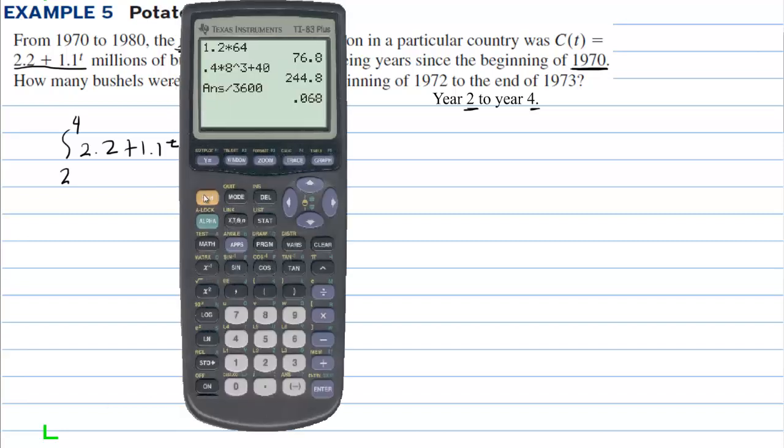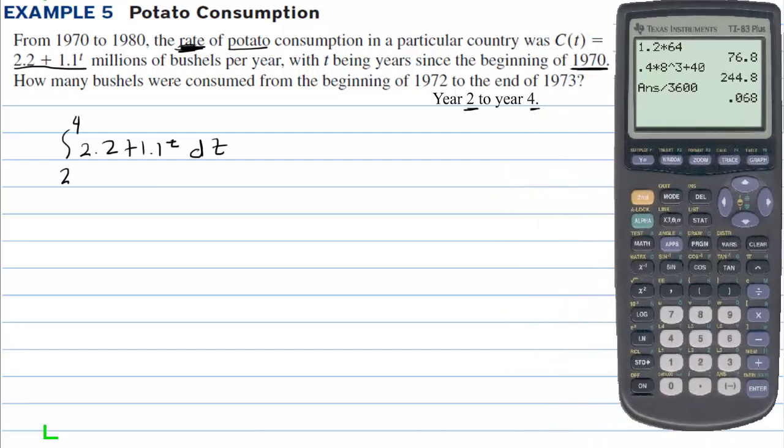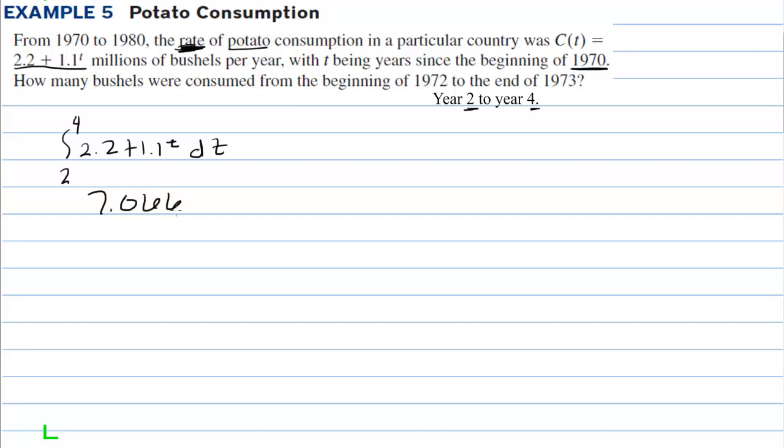So we have the integral from 2 to 4 of 2.2 + 1.1^t dt. We're going to use our calculator to do this. The point of this problem is that when you're given the rate of consumption and you want to know how many were consumed, it's integral. So we're going to go math, go down to fnInt, and we have 2.2 + 1.1 raised to the t power, x in this case. We're using the variable x, and we're going from year 2 to year 4. So the amount of potatoes consumed was 7.066, and I believe that is in millions. 7.066 million potatoes were consumed.